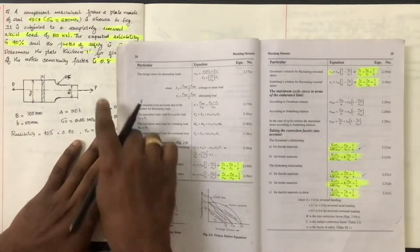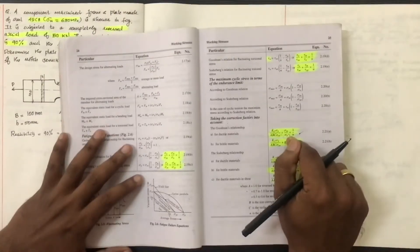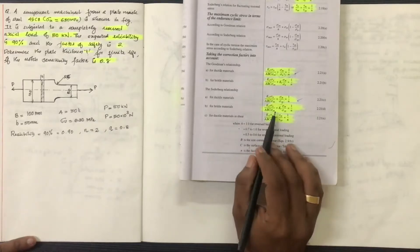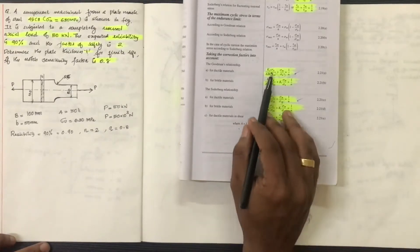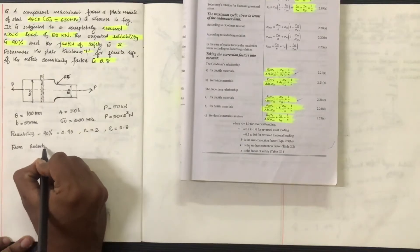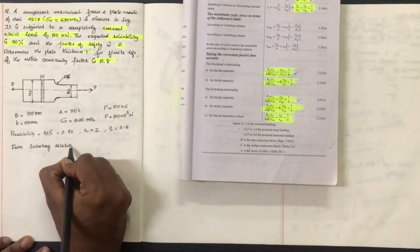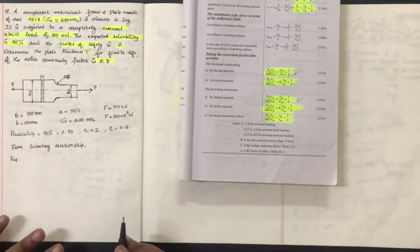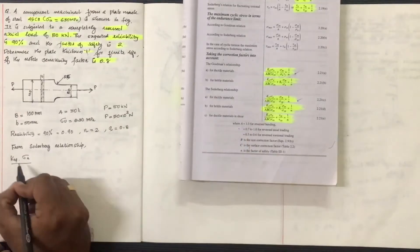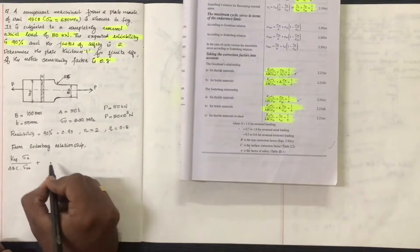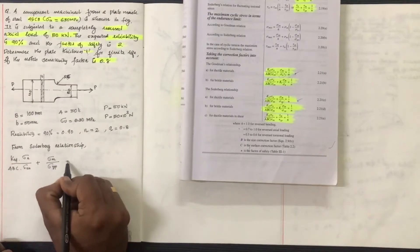Since we are dealing with fatigue loading under completely reversed axial load, we apply the Soderberg equation. The Soderberg relationship is: KTF × Sigma A divided by (ABC × Sigma EN) plus Sigma M by Sigma YP equals 1 by N.